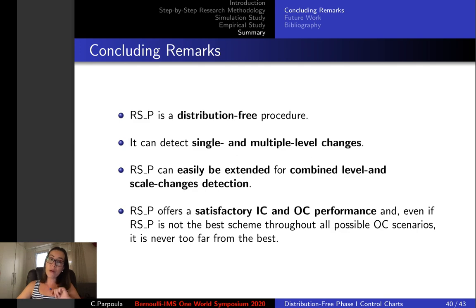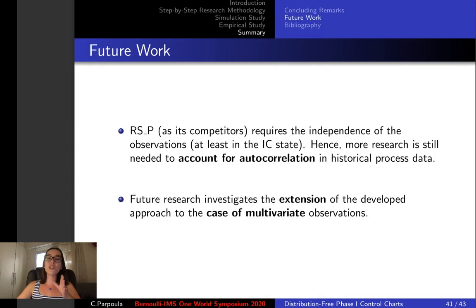However, a drawback of this technique is that RSP as its competitors requires the independence of the observations, at least in the in-control state. Thus, more research is still needed to account for autocorrelation. Also, it would be of interest to investigate how to extend this technique to the case of multivariate observations.